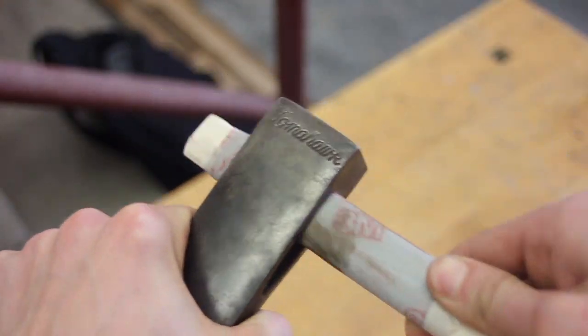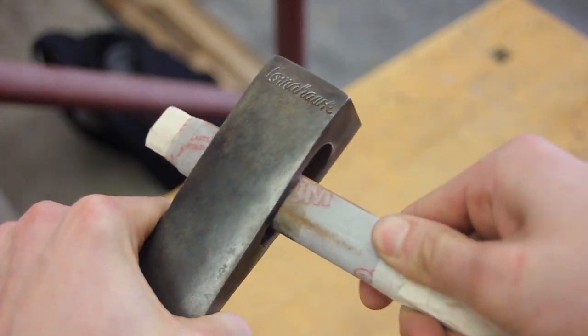I'm just doing some light sanding here on the eye of the axe head and this will help us when we go to hang the axe head later on.